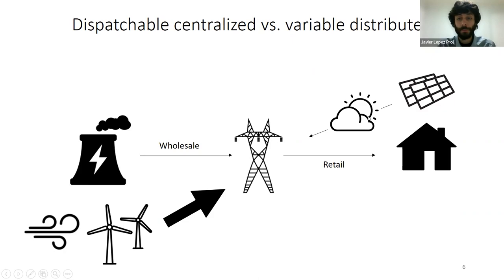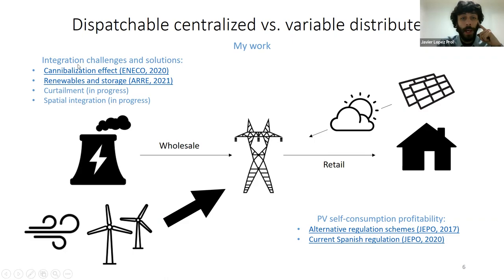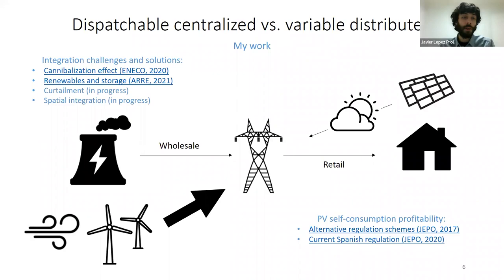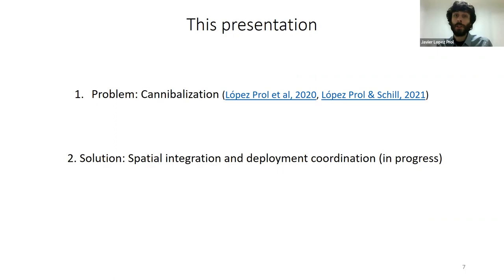We are moving from a centralized system in which power plants are dispatchable and adapt to demand patterns, to a system in which supply — or at least higher shares of supply — is variable. My work covers photovoltaic self-consumption from the retail side and integration challenges of variable renewables in wholesale electricity markets. I will focus on the cannibalization effect as the main problem, and then one potential solution: spatial integration of electricity markets across countries and deployment coordination of wind and solar capacities across those countries.